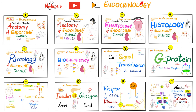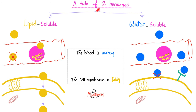This is my endocrinology playlist — please watch these videos in order. In previous videos, we talked about the G-protein and the receptor tyrosine kinase. But today it's time to talk about the non-receptor tyrosine kinase, also known as the JAK-STAT pathway.